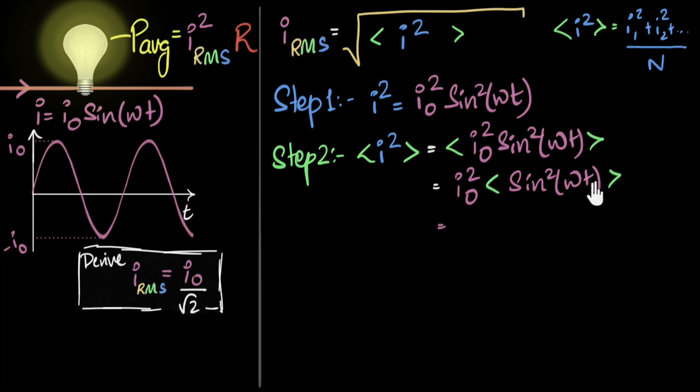I can take that common out. And therefore, I can always write this as I₀² times the mean value of sin² ωt. And the question now is, what is this? And this is the hardest part of the whole calculation. This requires mathematics because it's a continuous function.